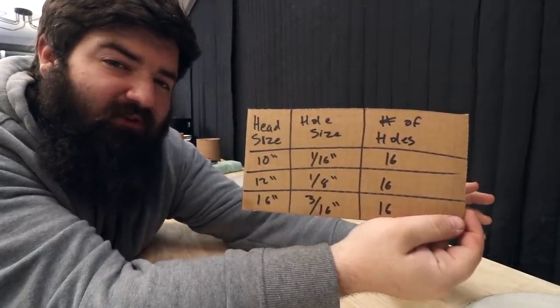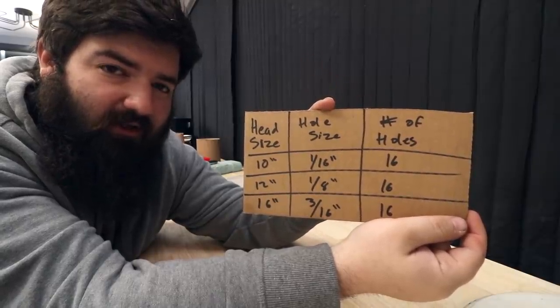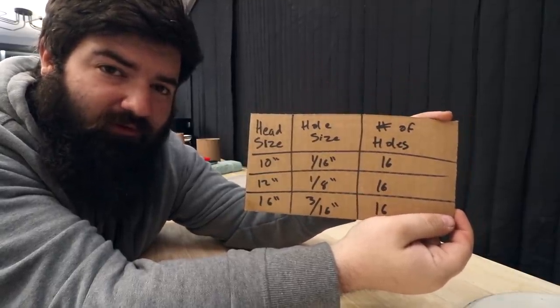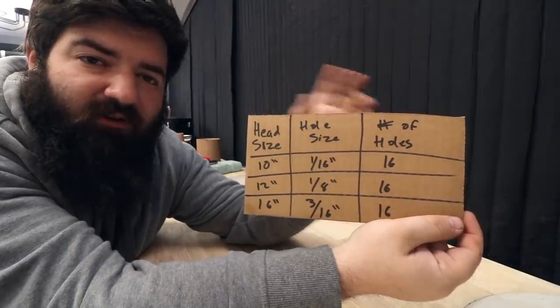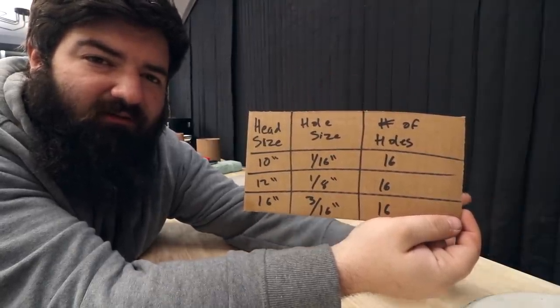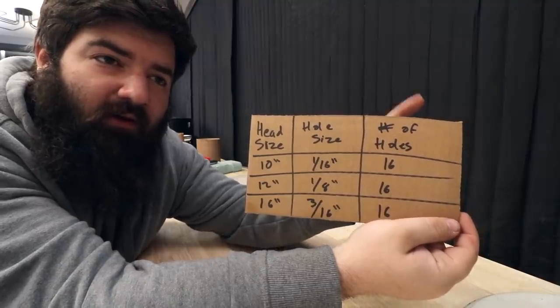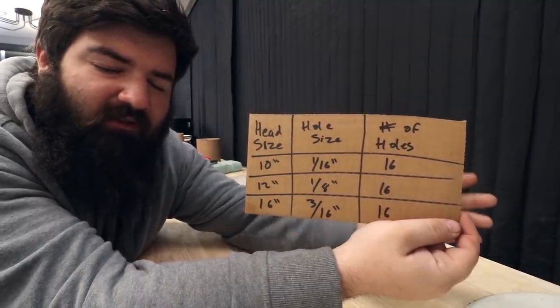I thought about doing the opposite and leaving the size of the hole the same and just adding more holes in the bigger size heads. But I think by scaling the size of the hole, we'll see more of a difference. And also laying out all of the same number of holes in each of the heads will be a little bit easier. So now let's test how to put some holes in some heads.